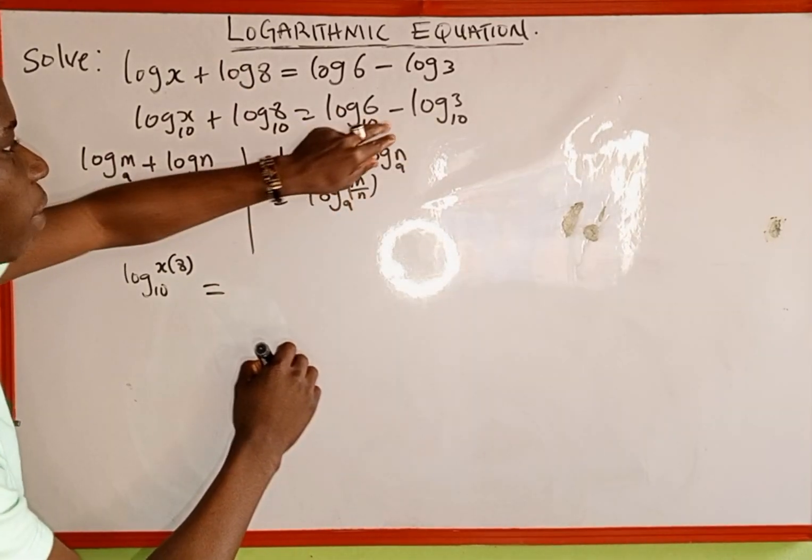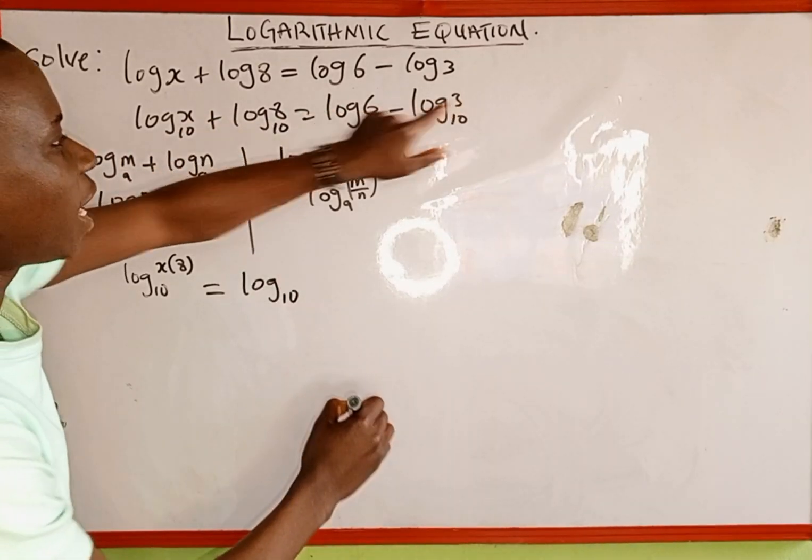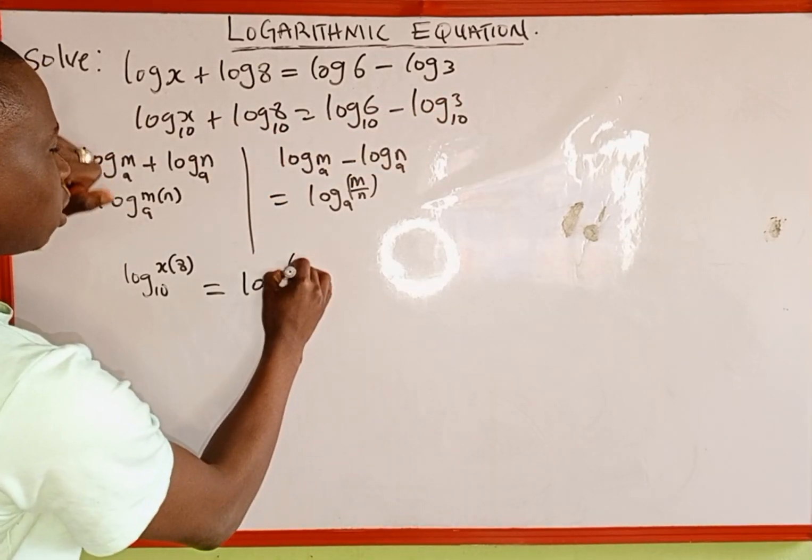Also, we apply this property to the right-hand side. Log to base 10, then we divide the two numbers, which is 6 by 3.